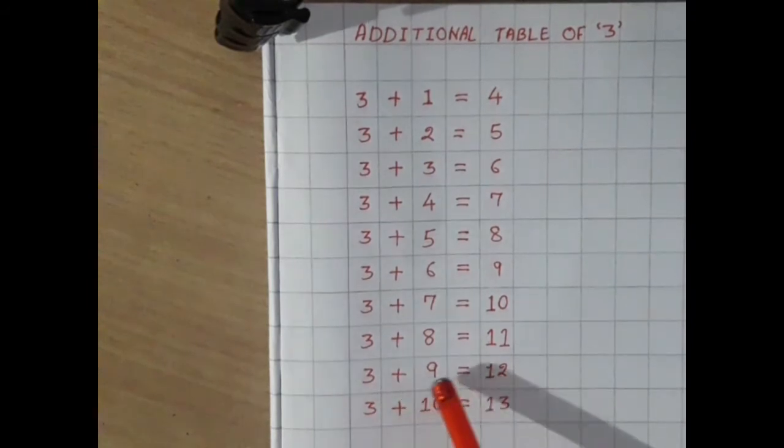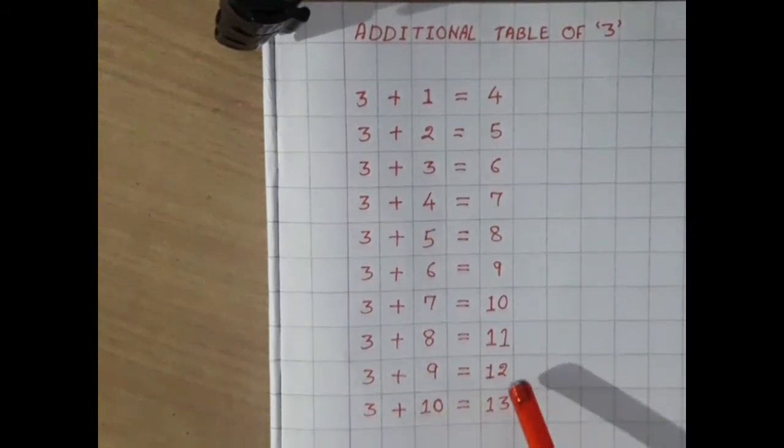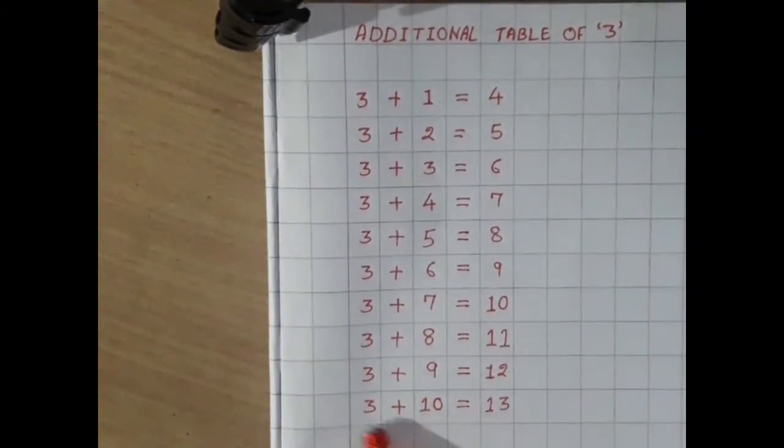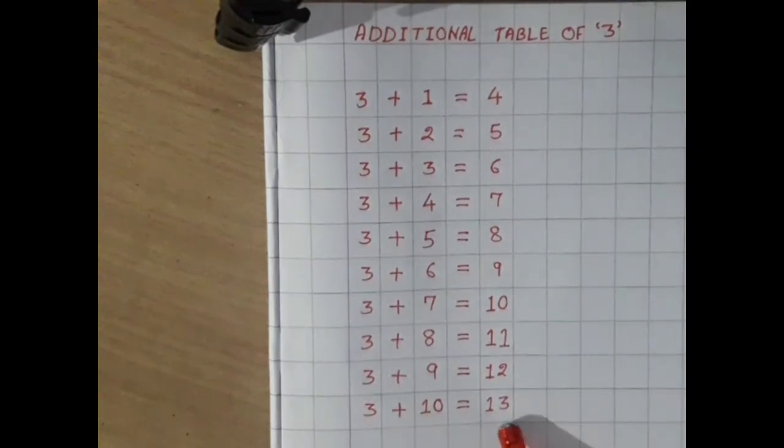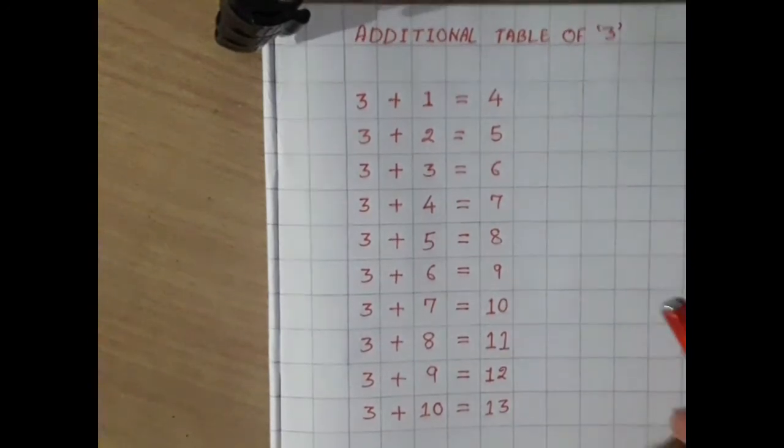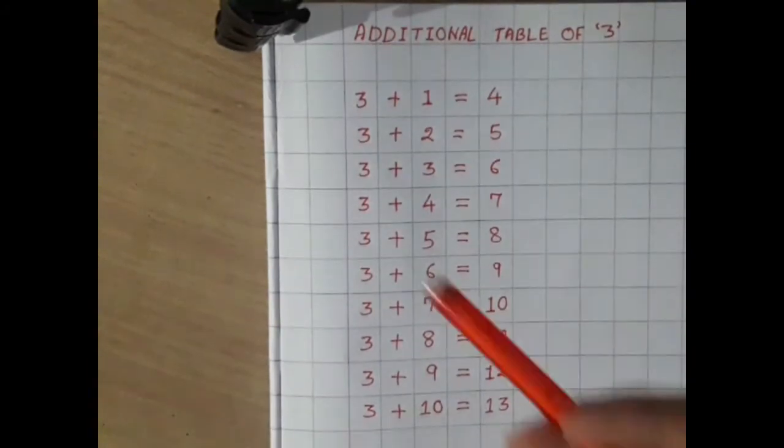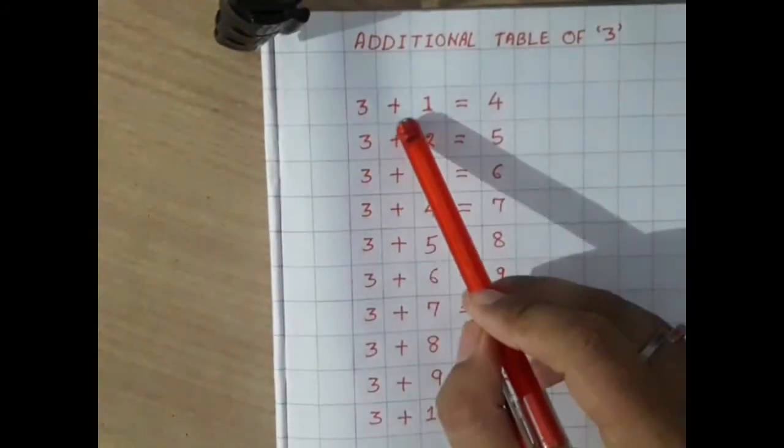3 plus 9 equals 12, and 3 plus 10 equals 13. Okay students, so let's repeat it again.